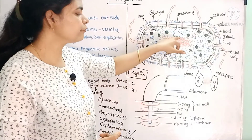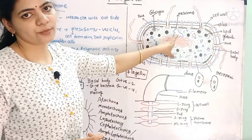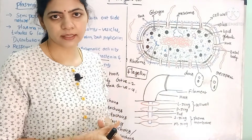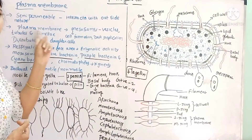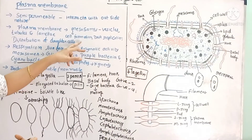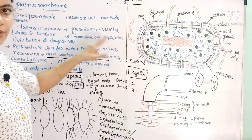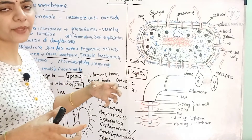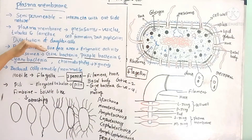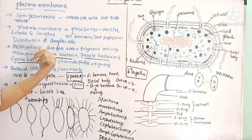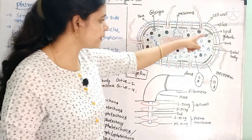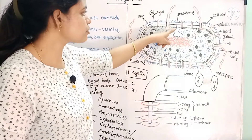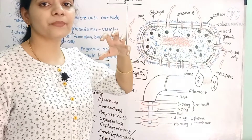The finger-like invaginations in the plasma membrane form the mesosomes. These mesosomes come in different shapes — tubular shape or lamella shape. Their functions include cell wall formation, DNA replication, and distribution to daughter cells. The important function is respiration; the energy released in the respiration process occurs at the mesosomes. These invaginations increase the surface area for enzymes.